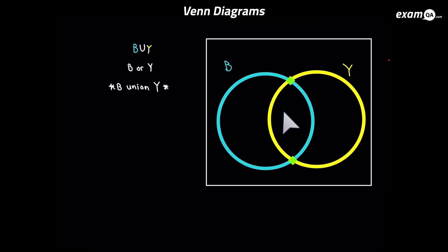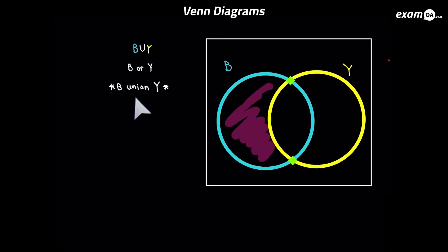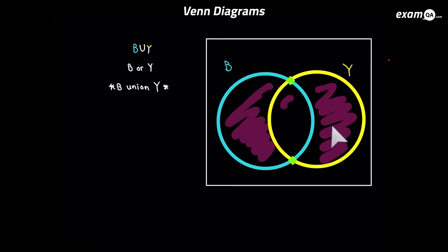Now we've got B with a ∪ sign and then Y. The official name for this is B union Y, but we can simply say 'B or Y'. So we'll look for any space which is B or Y or both — that's this bit, this bit, and also the middle. So it's everything in the circles.